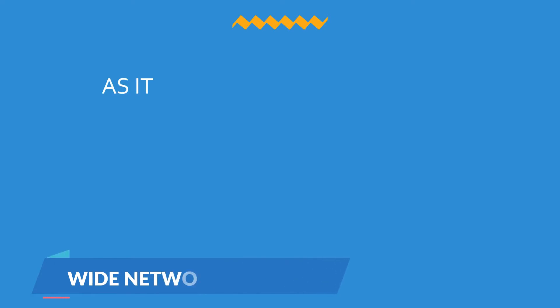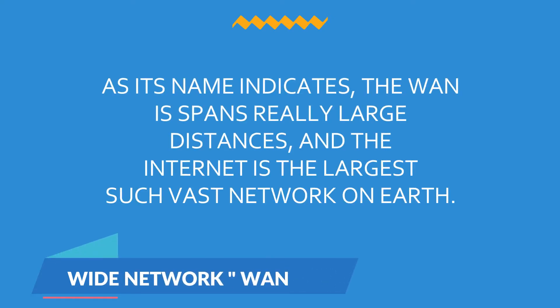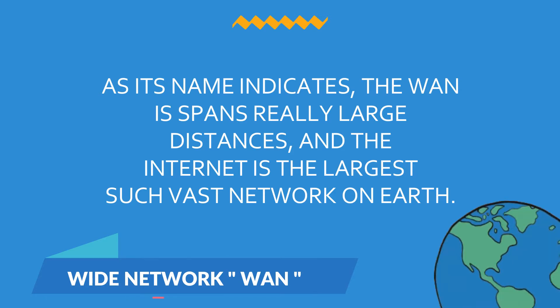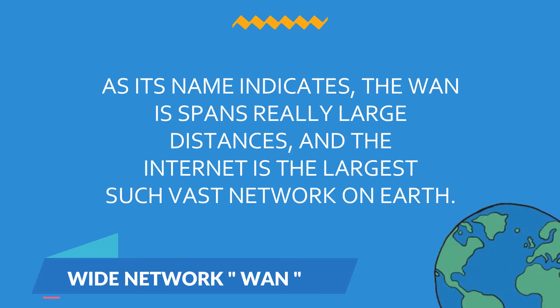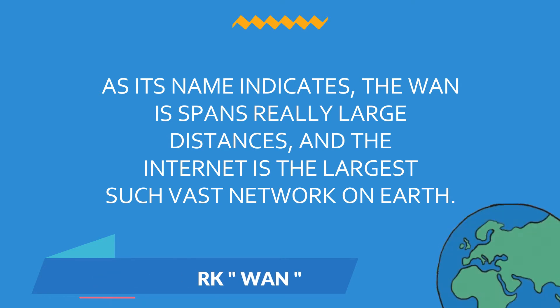Thirdly, wide area network WAN. As its name indicates, the WAN spans really large distances, and the internet is the largest such vast network on earth. A wide area network consists of a group of local networks spread geographically. The local networks are connected to the WAN using a networking device called a router.